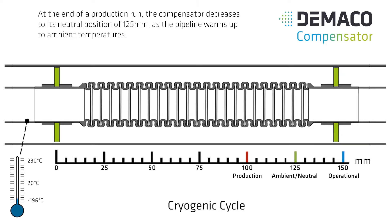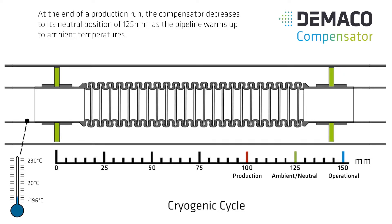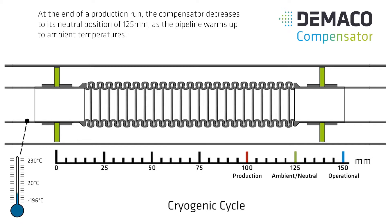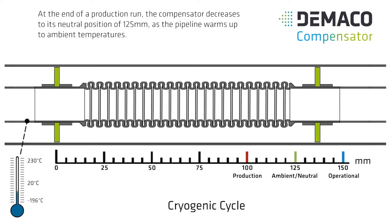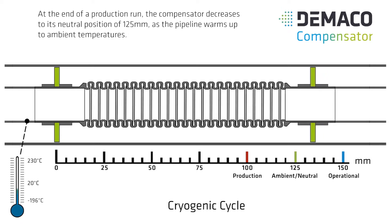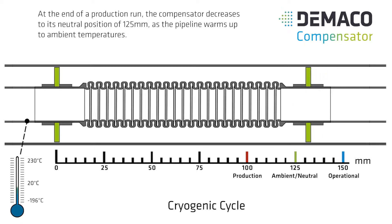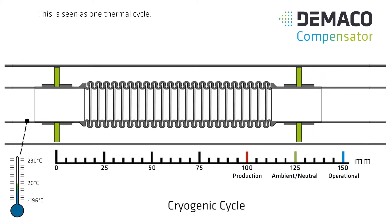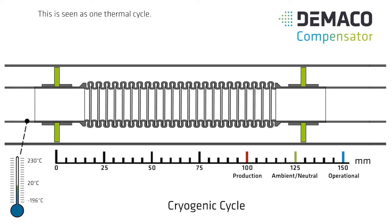At the end of a production run, the compensator decreases to its neutral position of 125 mm as the pipeline warms up to ambient temperatures. This is seen as one thermal cycle.